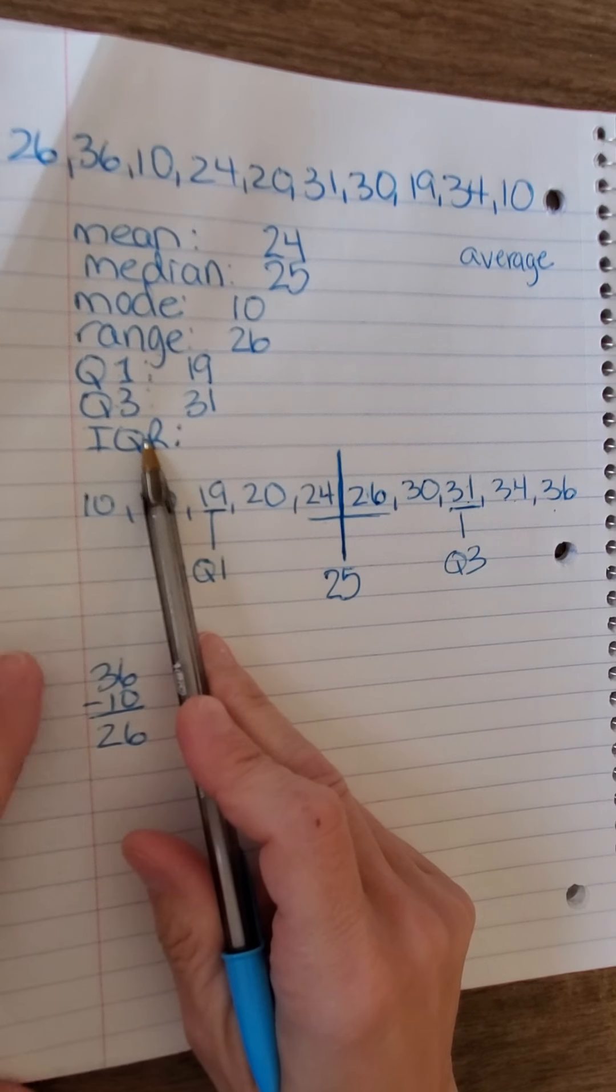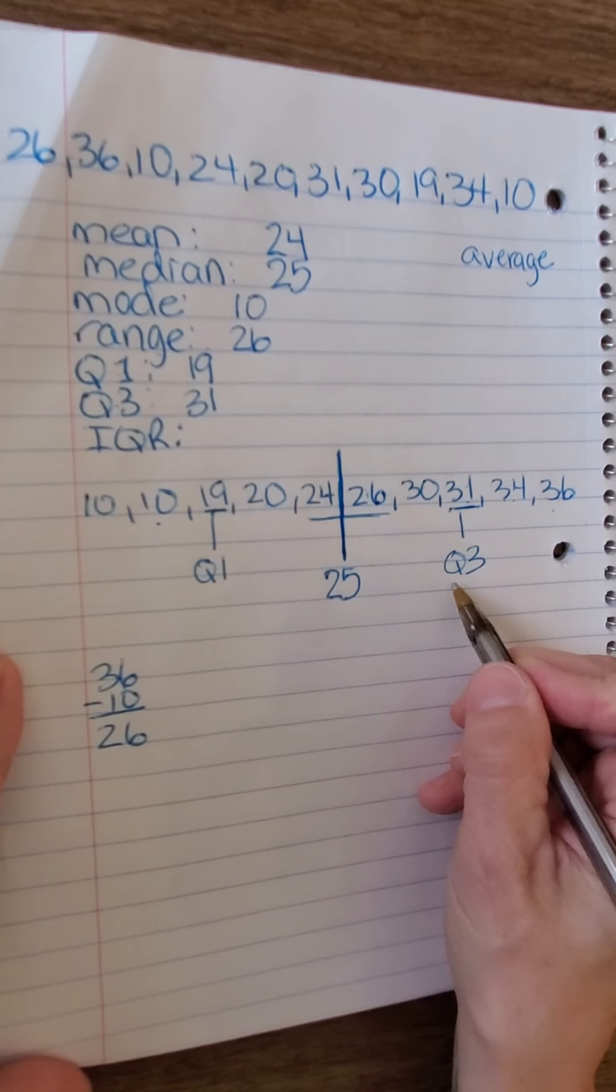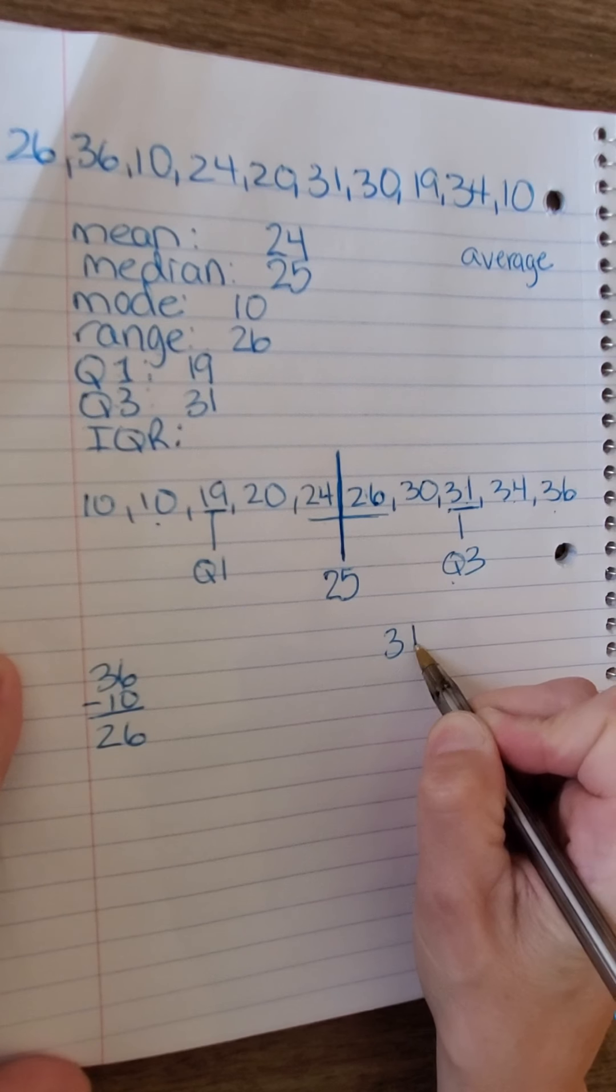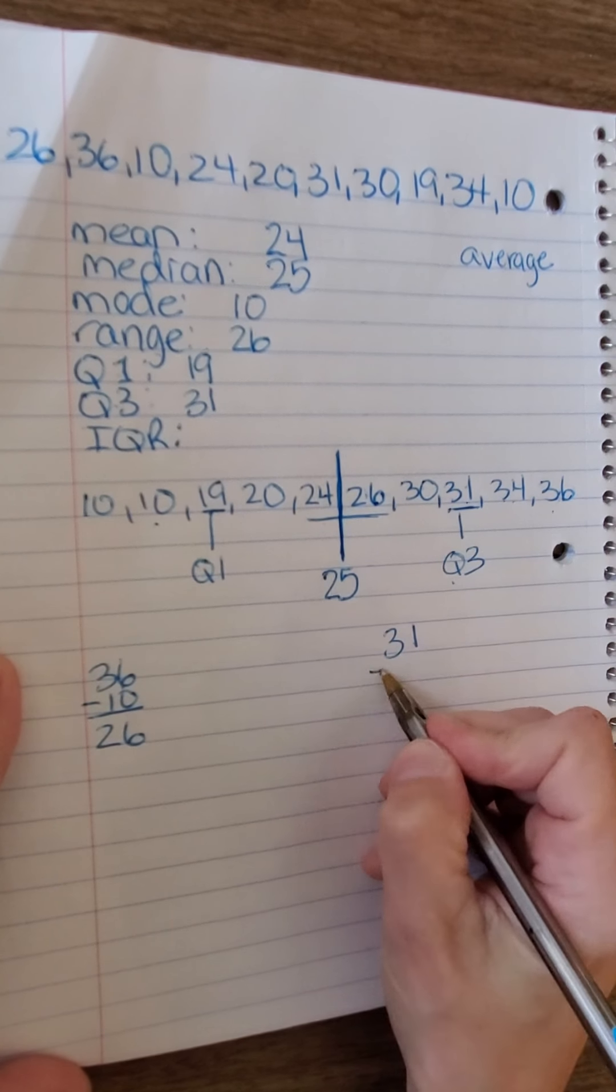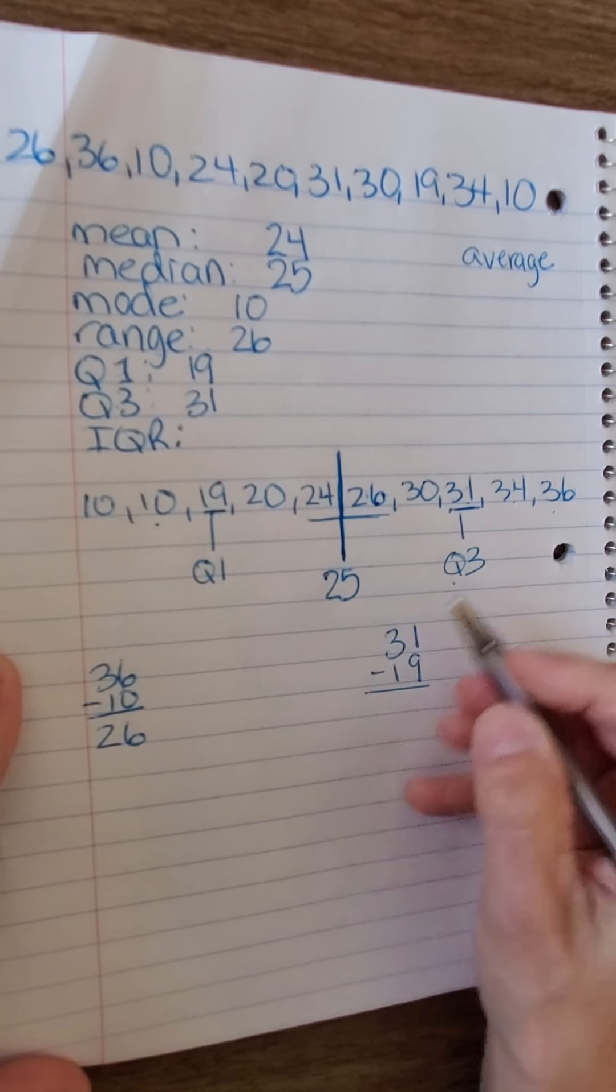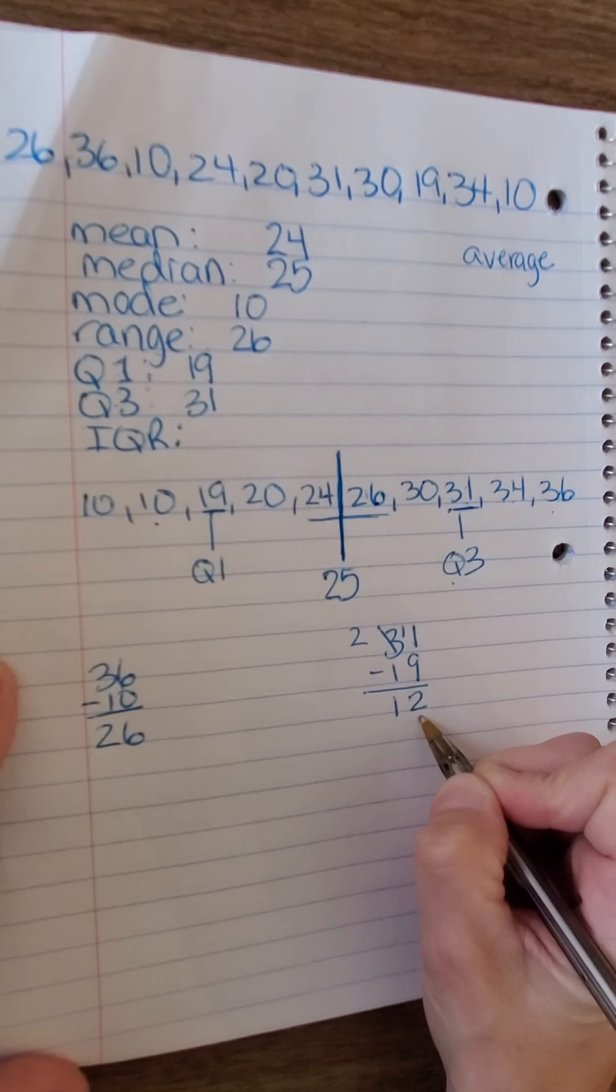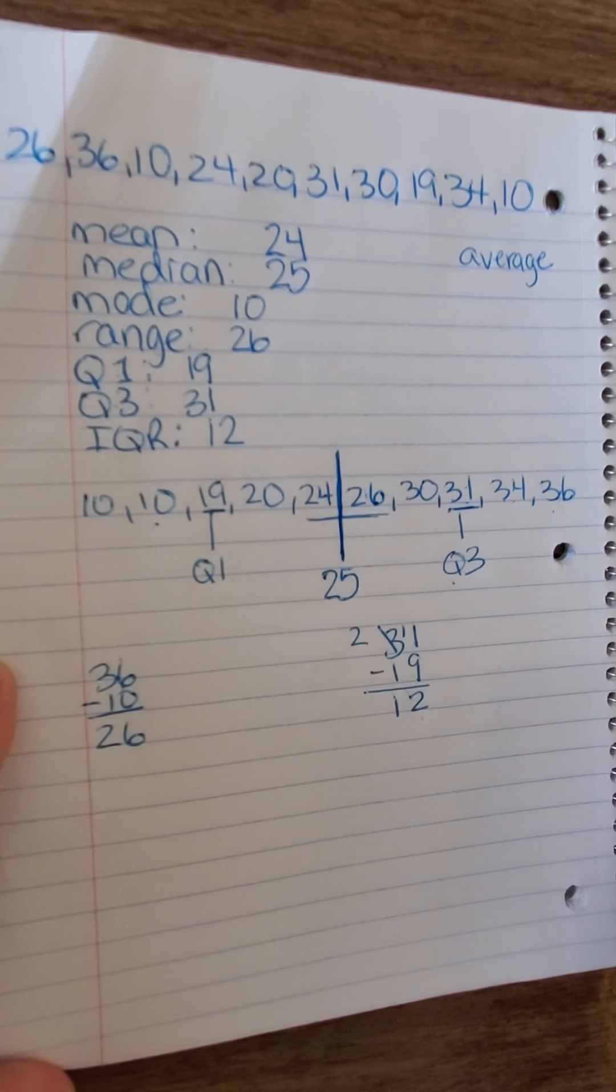And the last thing you were asked to find was the interquartile range. To find that, we take our number from Q3, 31, and we subtract our number from Q1, 19. 31 minus 19 is 12. So, our interquartile range is 12.